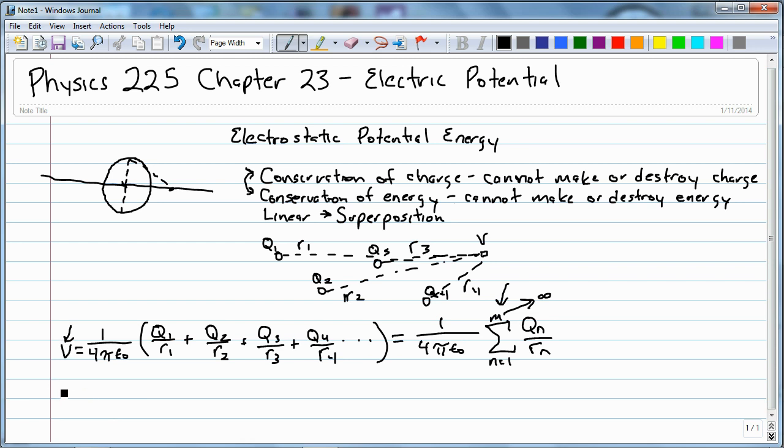Now one unit that is used quite a bit is the electron volt. So one electron volt is equal to 1.6 times 10 to the minus 19th joules. And this is the equivalent of one standard charge moving through one volt potential.